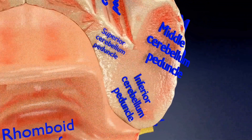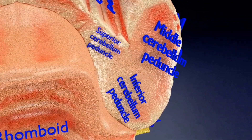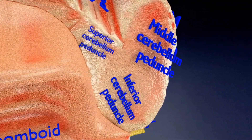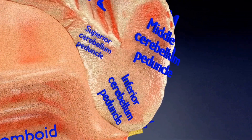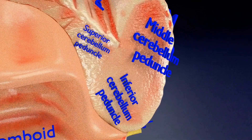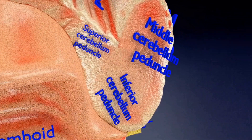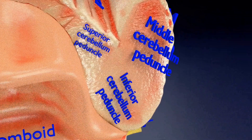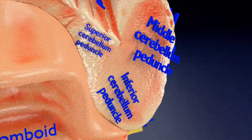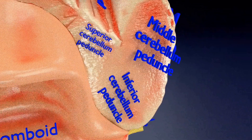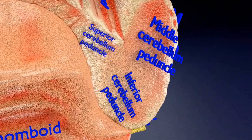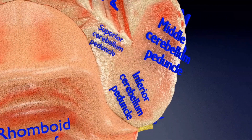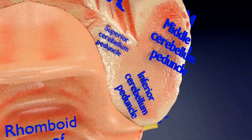The middle cerebellar peduncles connect the cerebellum to the pons. The inferior cerebellar peduncles form the lateral border of the fourth ventricle and form a distinctive diamond shape, with the middle peduncle forming the central corners and the superior and inferior peduncles forming the superior and inferior edges respectively.